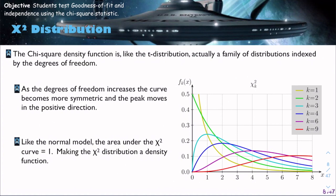As the degrees of freedom increases, the curve becomes more symmetric, and the peak moves in the positive direction. Like the normal model, the area under the chi-squared curve is always equal to 1, making the chi-squared distribution a density function. And if you ever want to graph it, you would use chi-squared pdf. We can see that on our graphing calculators when we go back to the CEO problem.